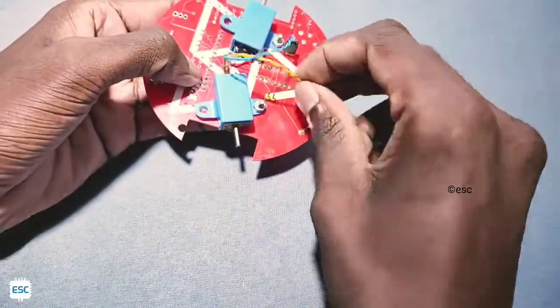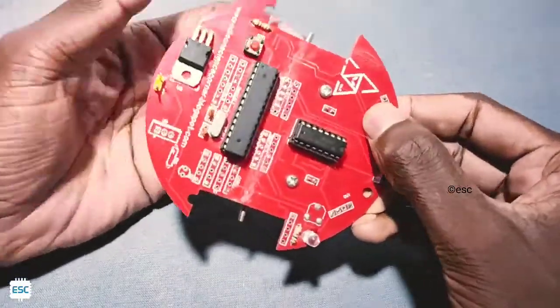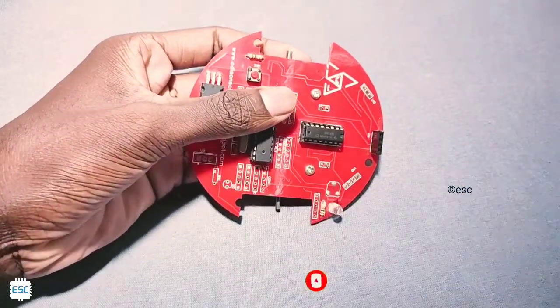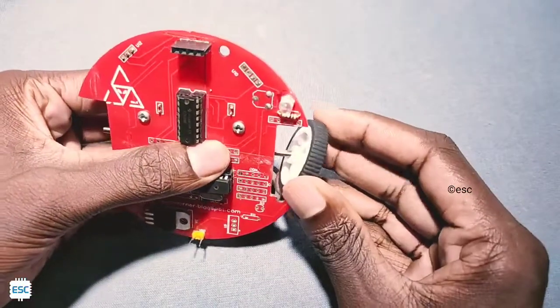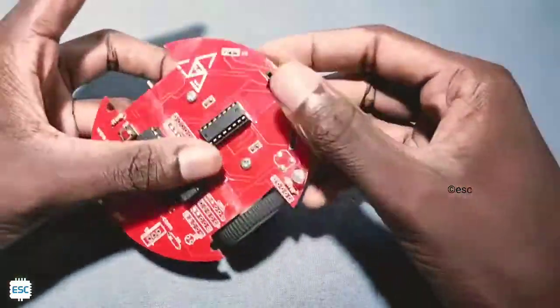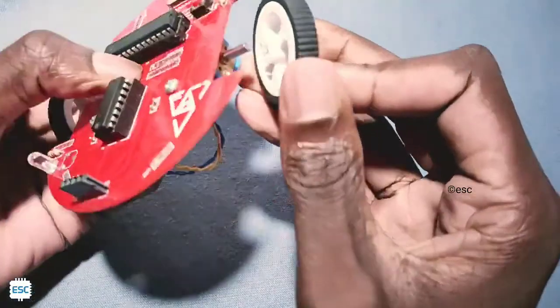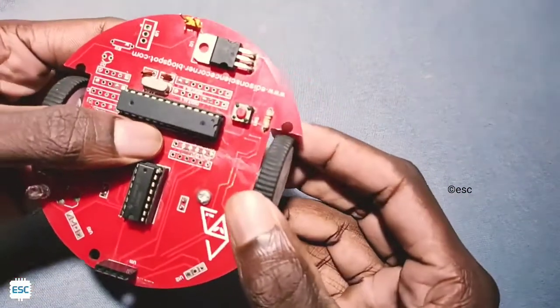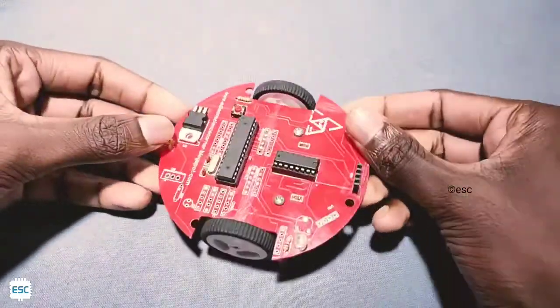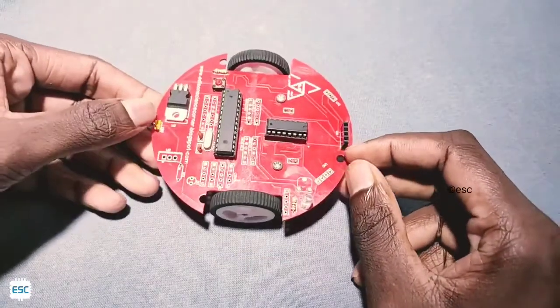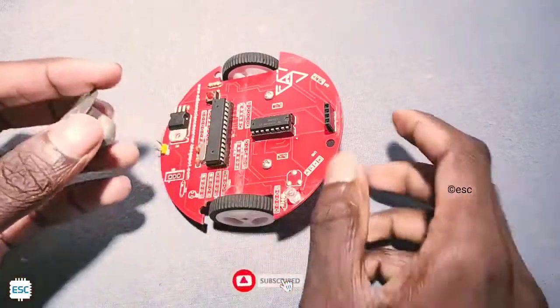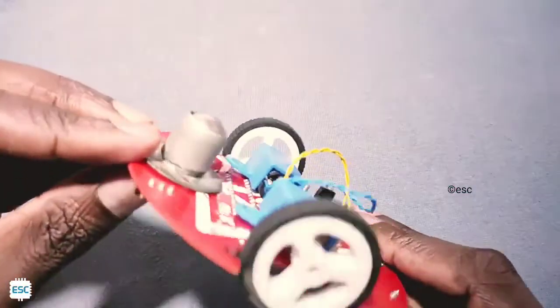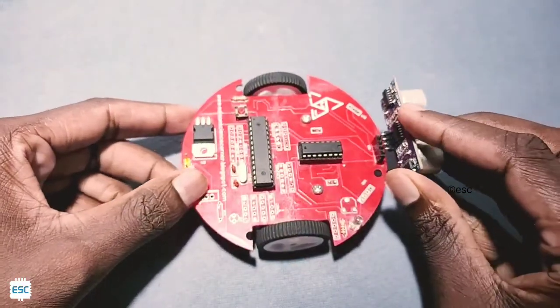Next I connected the motors to the driver. After that, let's add wheels for our robot. Then I added a caster wheel for balancing. So finally I inserted the ultrasonic sensor on its socket.